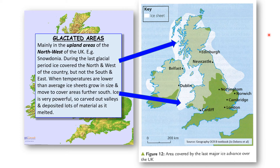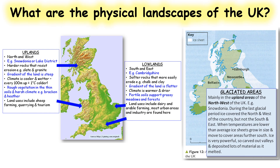During the last glacial period, ice covered the north and west of the country but not the south and east. When temperatures were lower, huge ice sheets grew in size and moved to cover areas further south. In certain areas these thick ice sheets were miles thick, sitting on top of our country. The ice was powerful — it carved out valleys and deposited lots of material as it melted. You can find glacial features within these areas such as U-shaped valleys and drumlins.